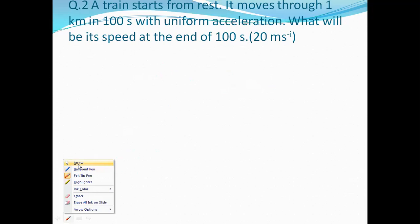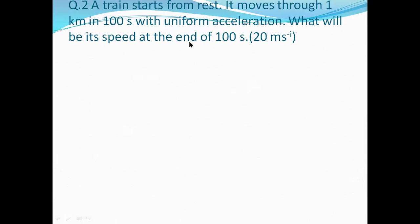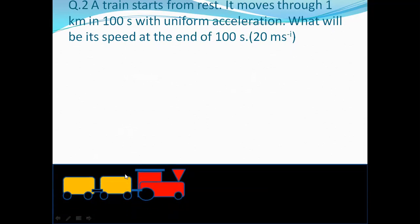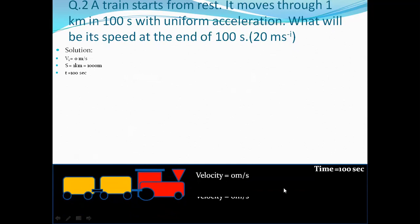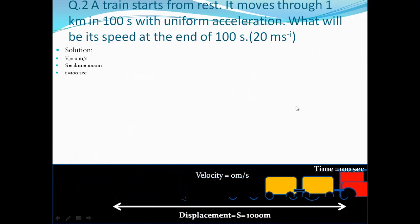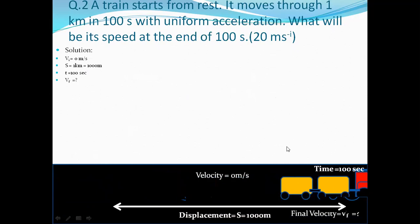The question says the train goes through 1 kilometer in 100 seconds starting from rest, with uniform acceleration. What will be its speed at the end of 100 seconds? The expected answer is 20 meters per second. The train has initial velocity of 0 m/s, travels 1000 meters in 100 seconds, and we must find the final velocity.